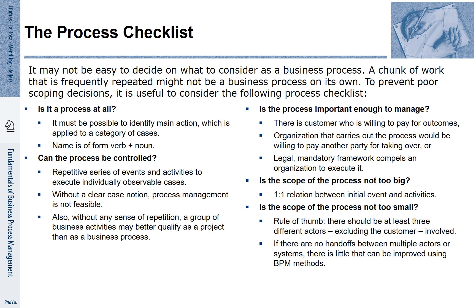We also have to ask ourselves about the scope of the process: is it too big or too small? It is very suitable to identify a process in a one-to-one relationship with the desired outcome. For example, if you are handling a loan request, a loan request comes in from a customer, is processed and decided, and the outcome is one loan — so there is a one-to-one correspondence between the customer and the loan.